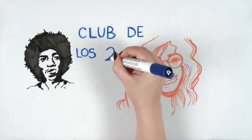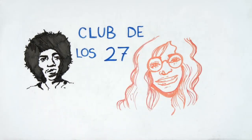Winehouse, Hendrix, and Joplin are part of the so-called 27 Club, to which belonged different artists who died at this age.